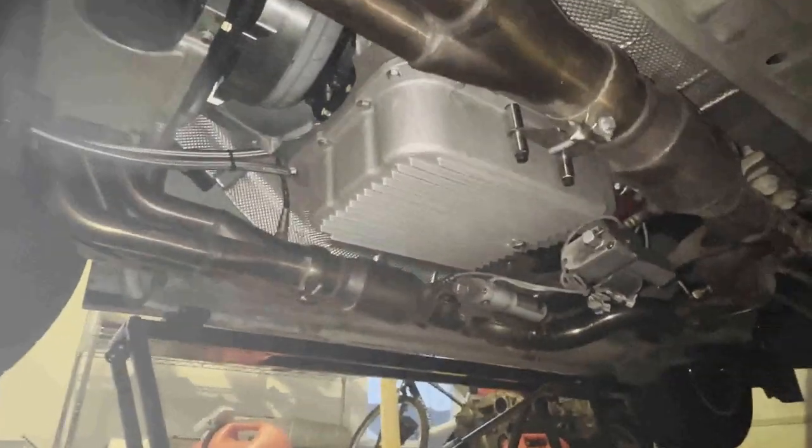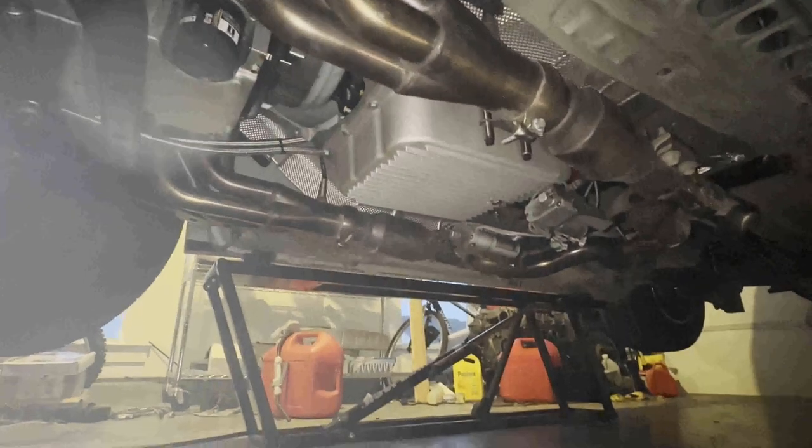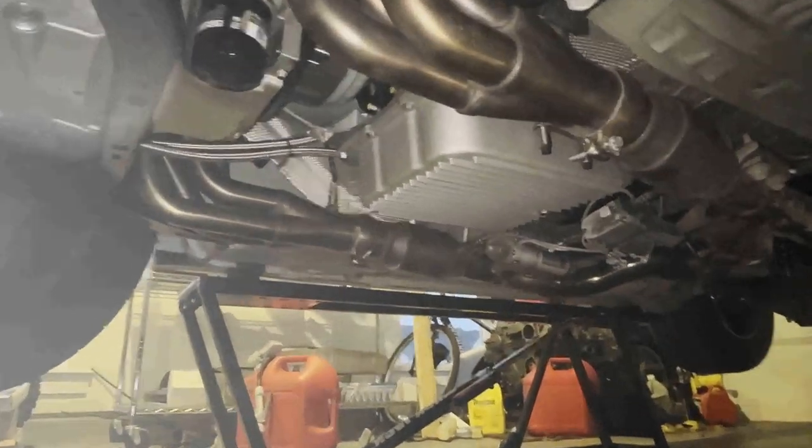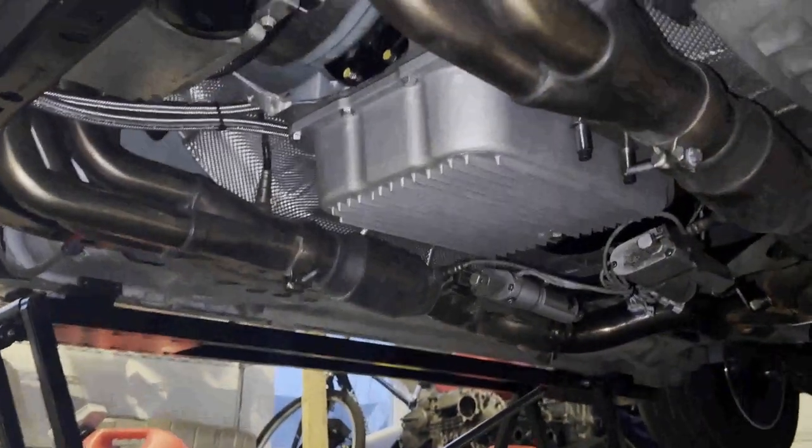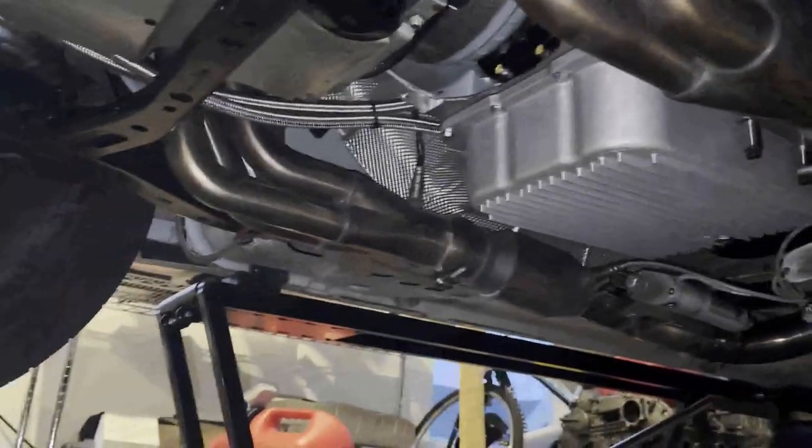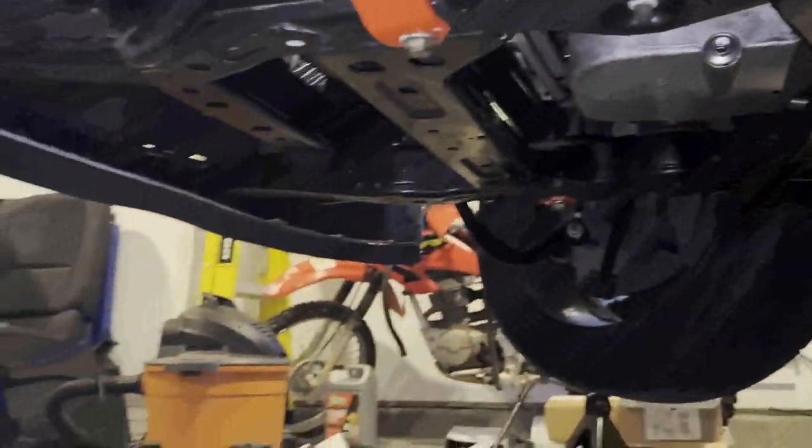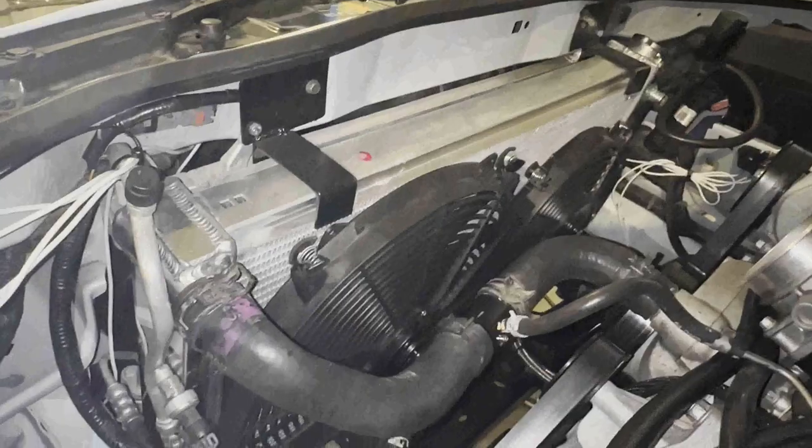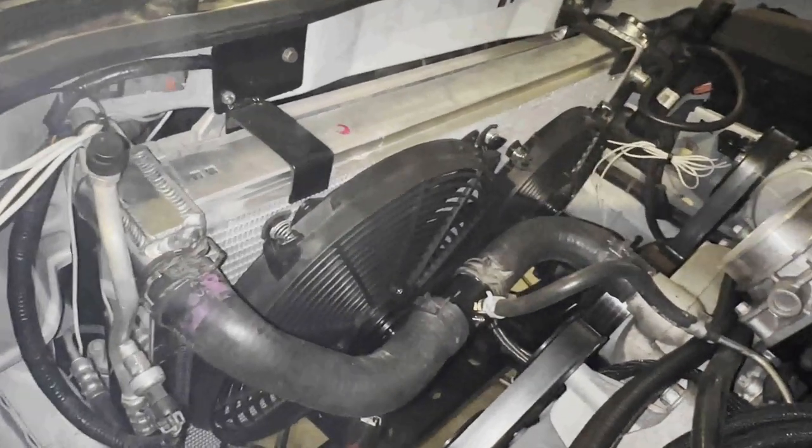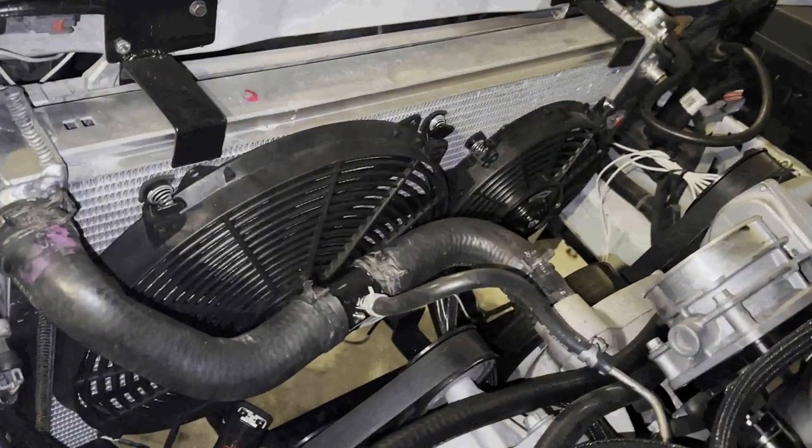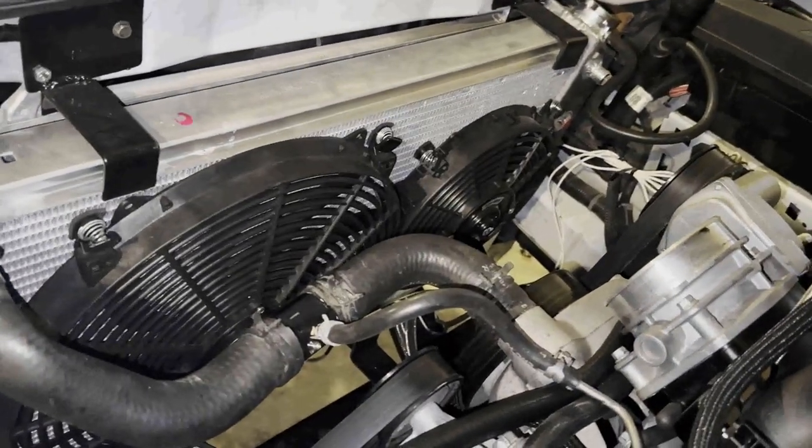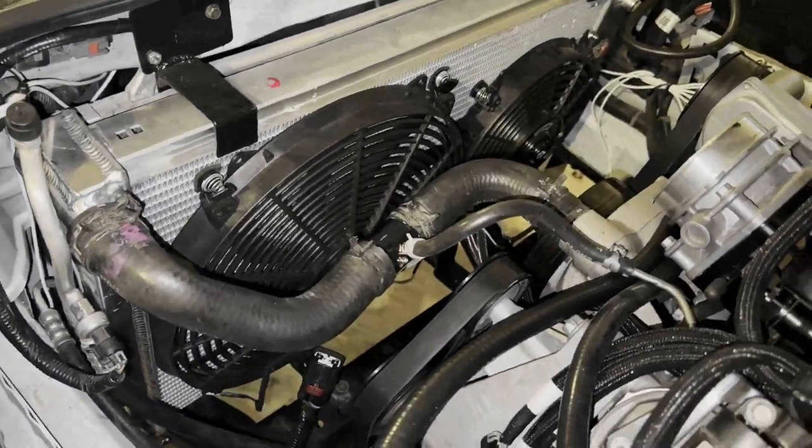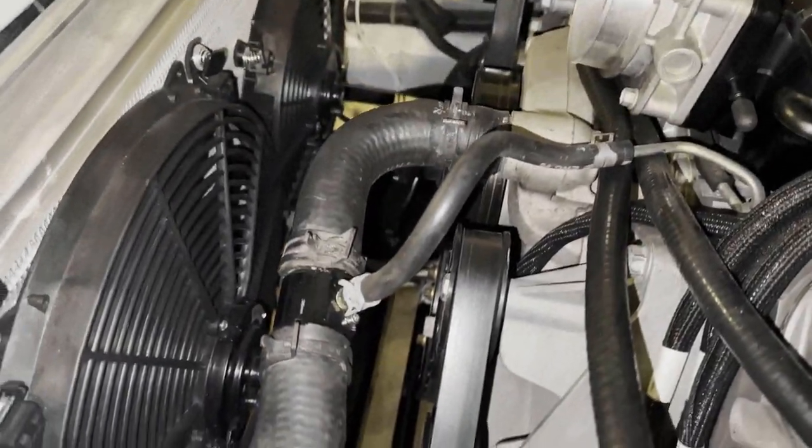There's a 4L80E I got from Jake's Performance. The transmission pan was actually leaking a bit on me, it seemed to be warped, so I got an aluminum one. In the engine bay, I've got a Summit brand, Summit Racing brand radiator and two electric fans, one's a 16 inch I believe and the other one's like a 10 inch. Don't quote me on that, I can't remember exactly.